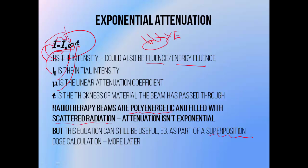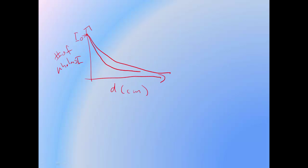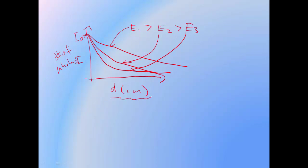The reason you only see true exponential attenuation in mono-energetic beams is that photons with different energies experience attenuation at different rates. Photons of one energy will attenuate at a rate like this; photons of a lower energy will attenuate at a higher rate like this; photons of a higher energy will attenuate at a lower rate. If a beam contains multiple energies, the attenuation curve will be an average of the curve for each of the energy components within.